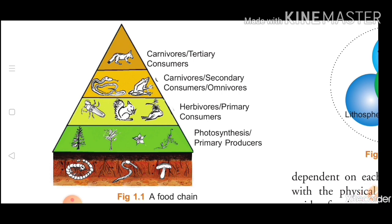This figure shows interdependence, because I have stated that producers, consumers, and decomposers are all interdependent on each other. So let's make this figure clear. At the first level we have the primary producers. Now let's talk about the second level — primary consumers, also called herbivores.